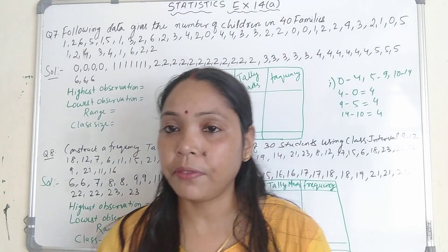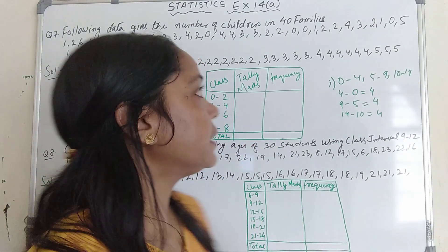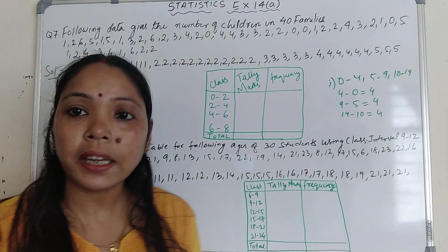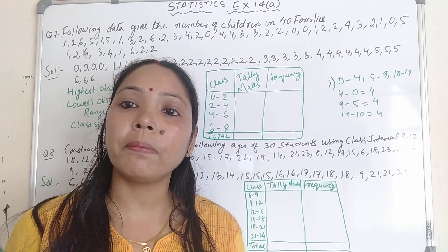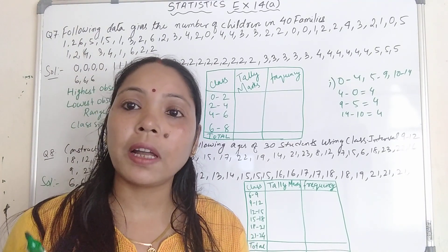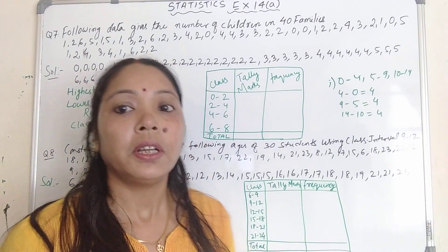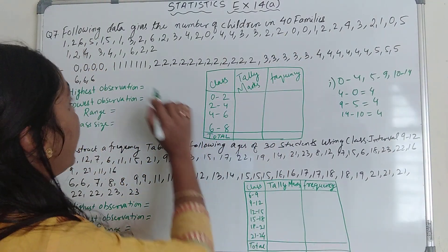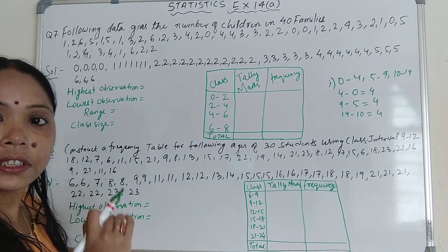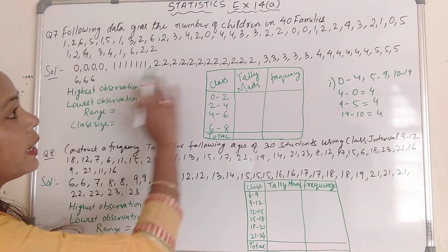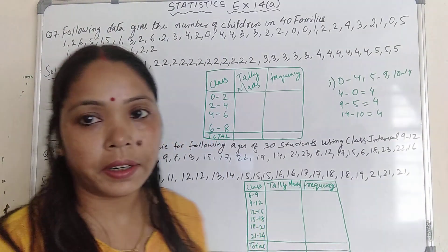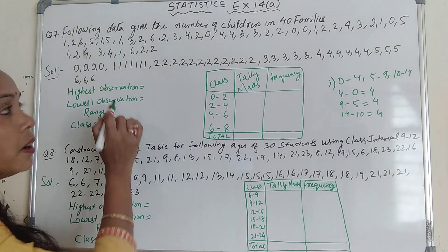Now see question number 7. Question number 7 is: following data gives the number of children in 40 families. So total number of families is 40 — we can say total number of observations is 40. The number of children are given in these 40 families. So again, here first try to arrange in ascending order. I have already arranged in ascending order.